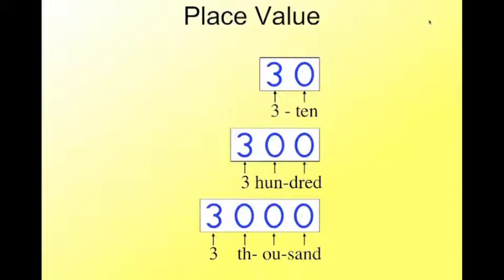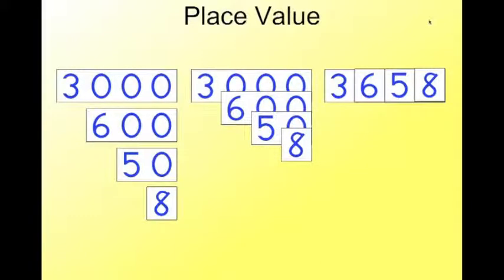So here's place value using the place value cards. 3, 10. 3, 100. Thousands don't work quite as nice. You kind of got to work with me a little bit on this one. But it's 3,000. So we're using the syllables to help us with the place value. Here's 3,000, 600, 5, 10, 8. So again, if I wonder what was that 6 over here, I can pull it apart and see that, in fact, it was 600.